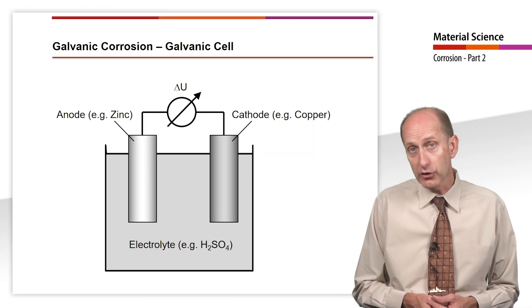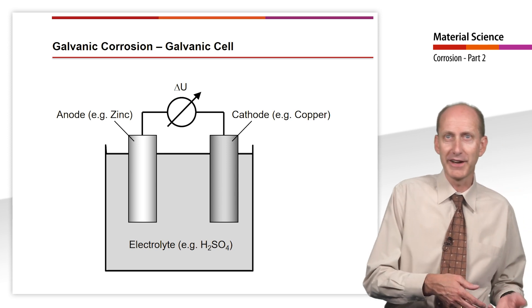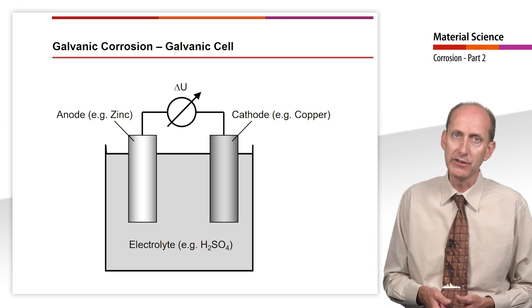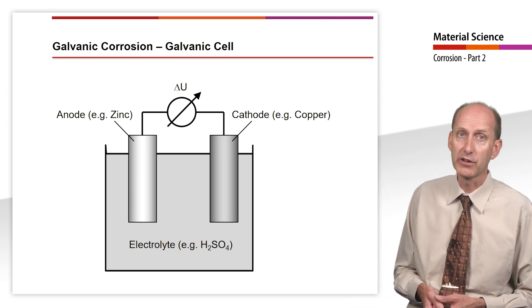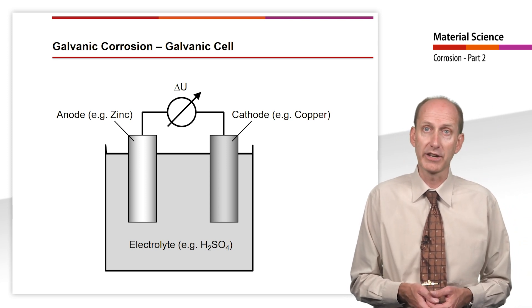Immersing two different conductors, that is to say electrodes, in a conductive liquid, that is to say an electrolyte, produces a galvanic element or galvanic cell. A voltage is generated between the conductors.